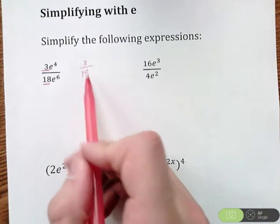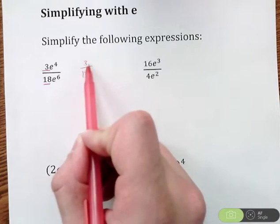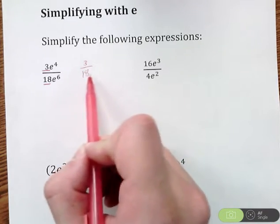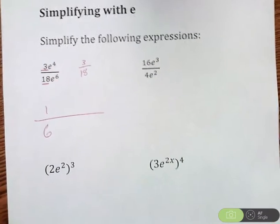To simplify that, that's just like simplifying any other fraction. We look for what number can we divide both the top and bottom. Well, the top can be divided by 3, the bottom can be divided by 3. So we get 1 over 6 when we reduce that fraction.